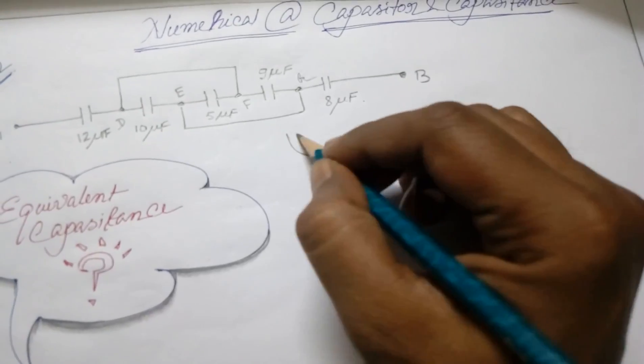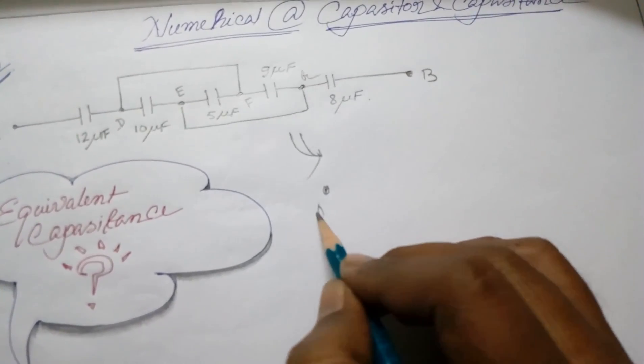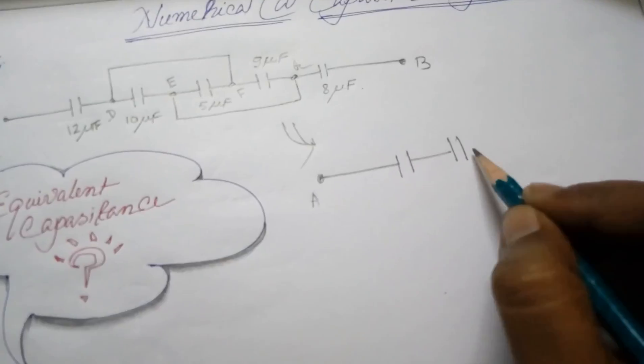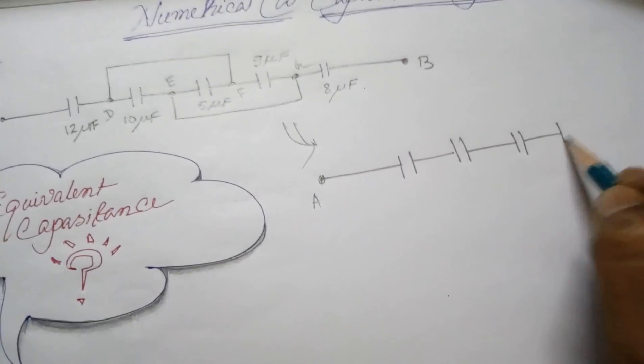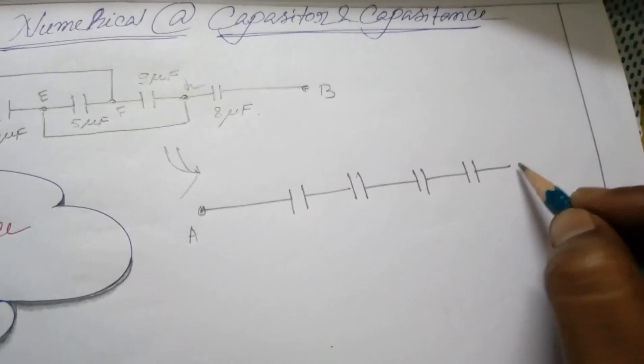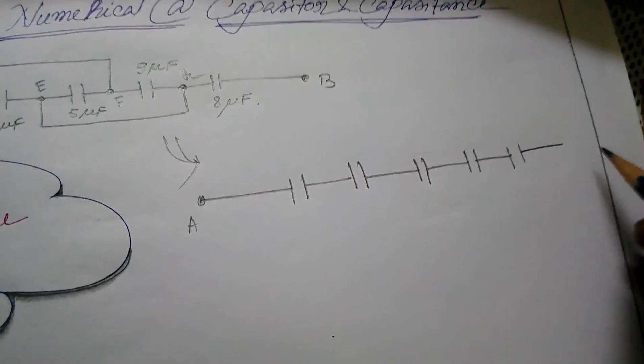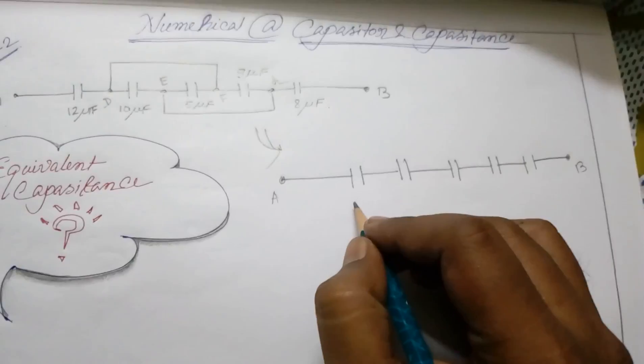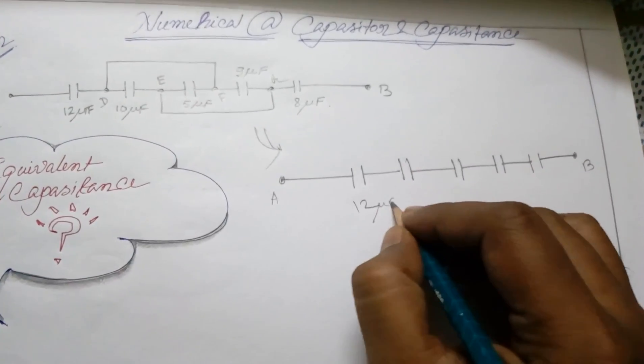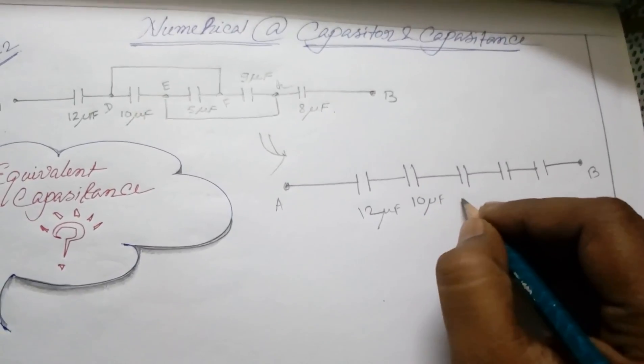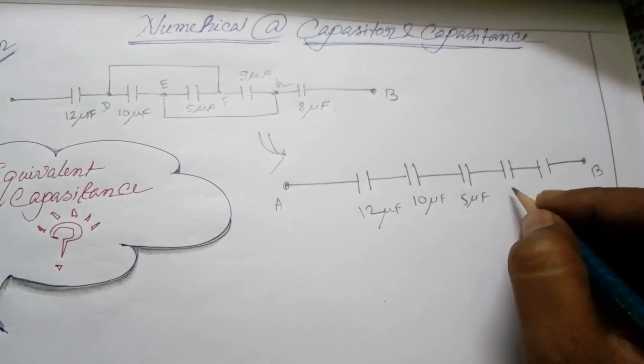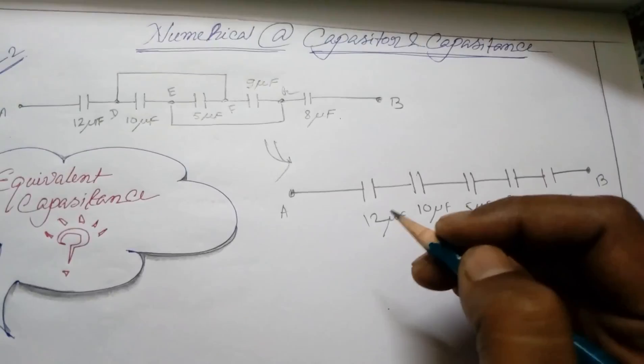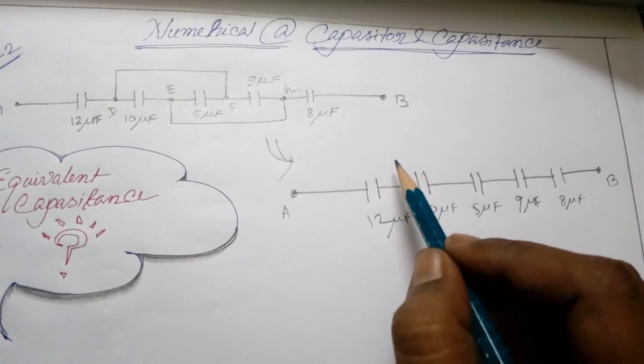Now let's redraw the circuit. A, 12, 10, 5, 9, and finally we have 8. And last we have terminal B. What we have: 12, 10, 5, 9, 8, and we have to connect them.